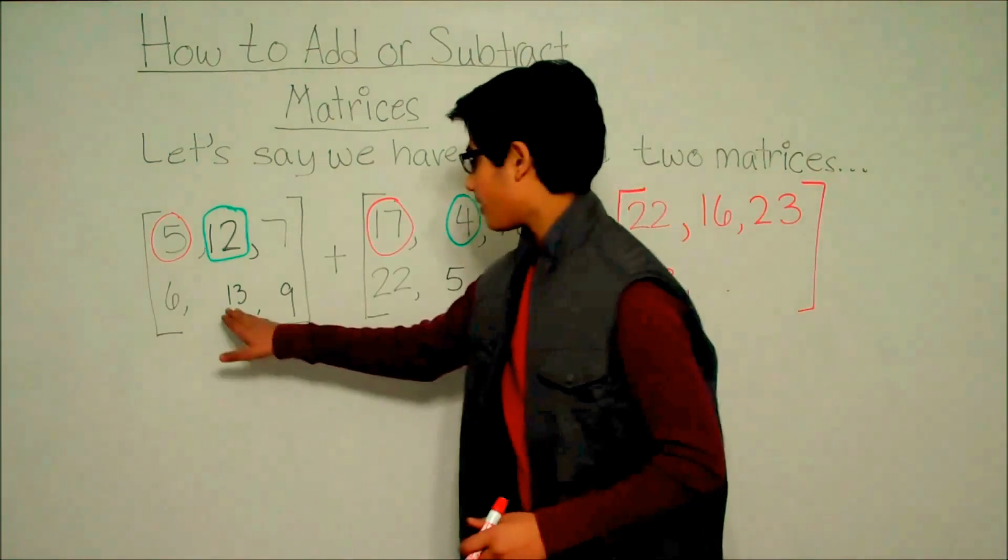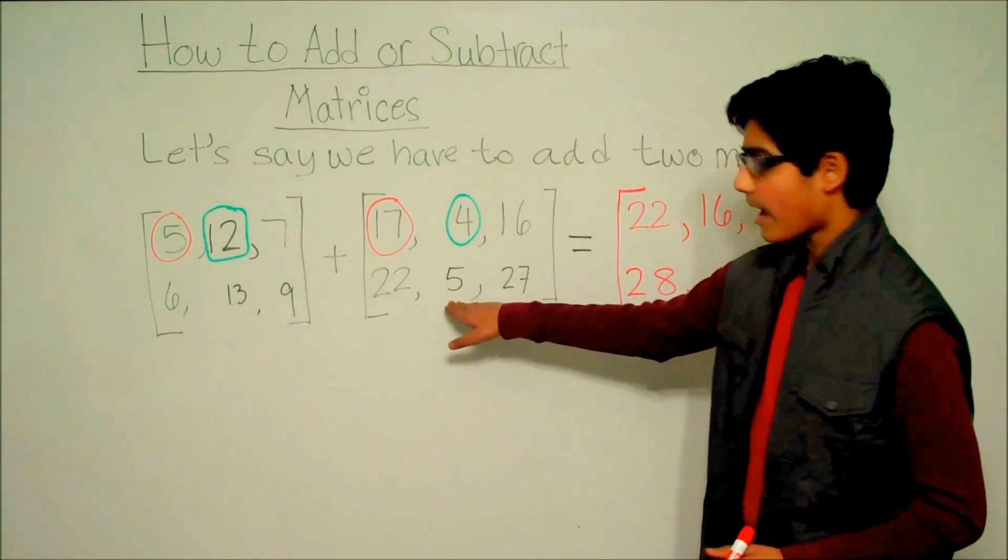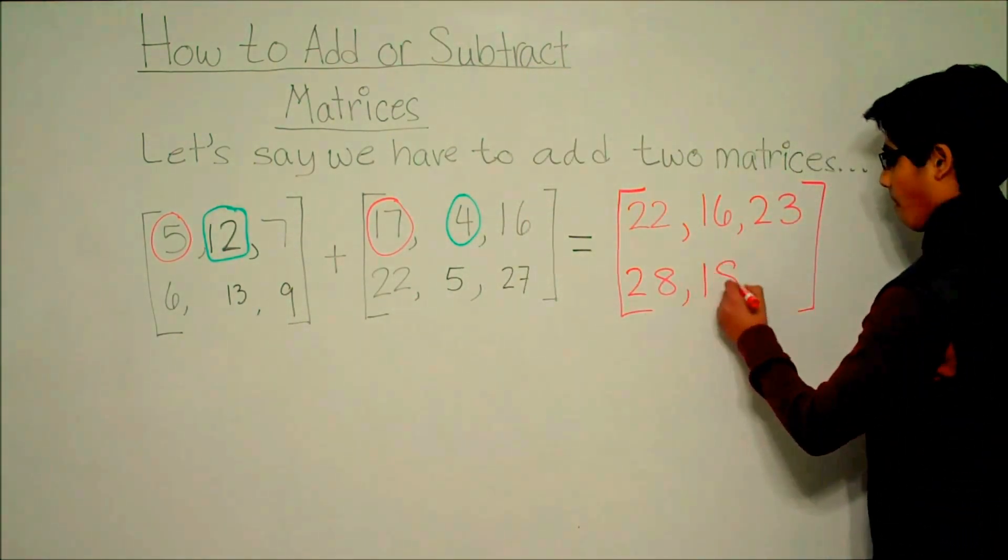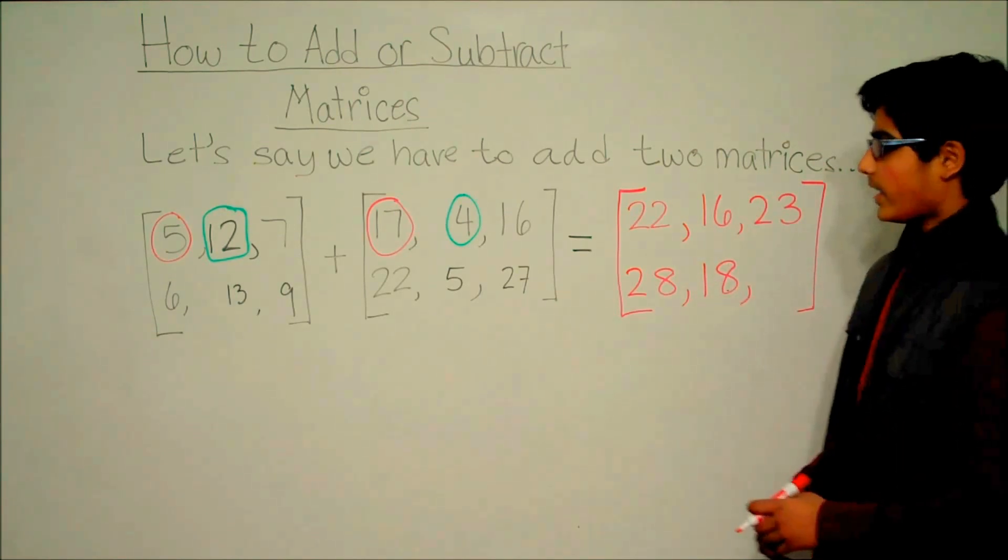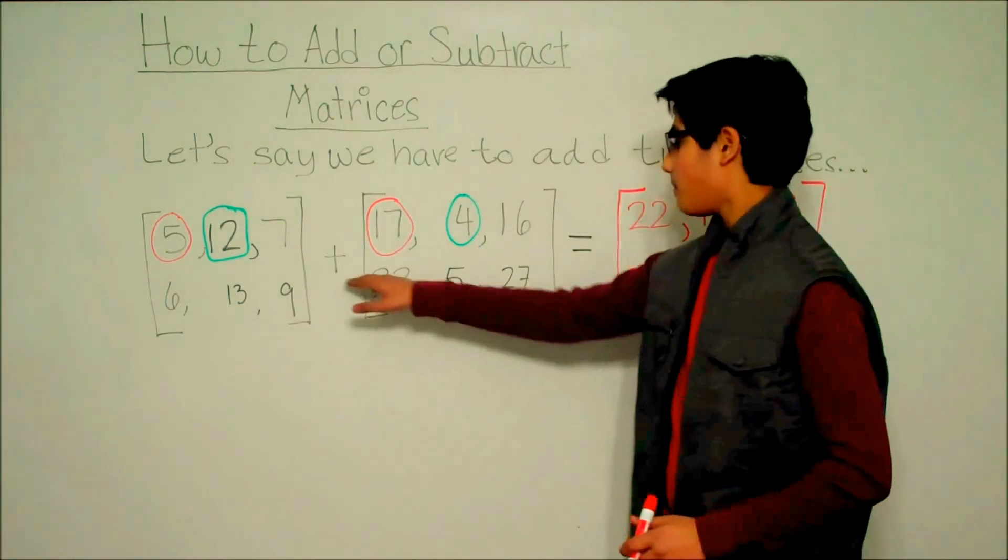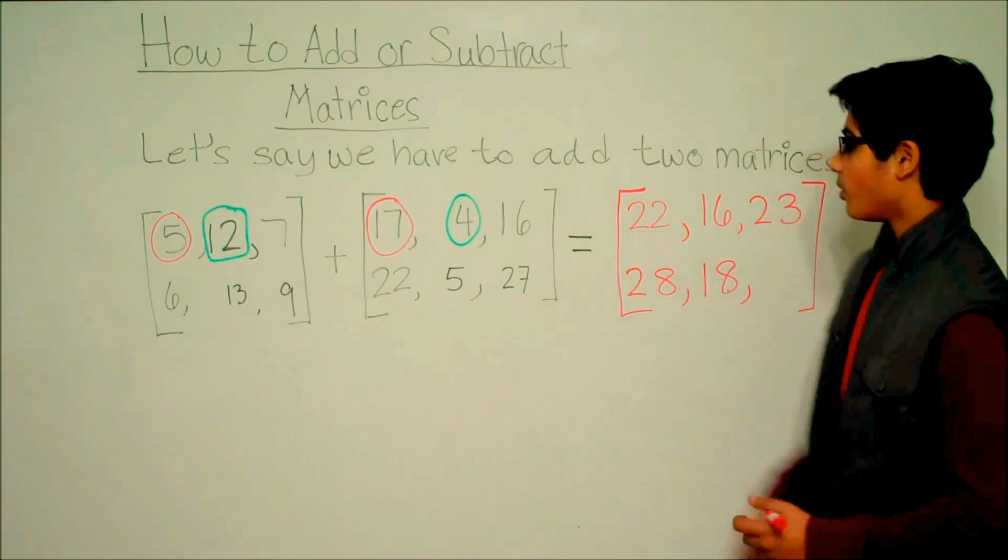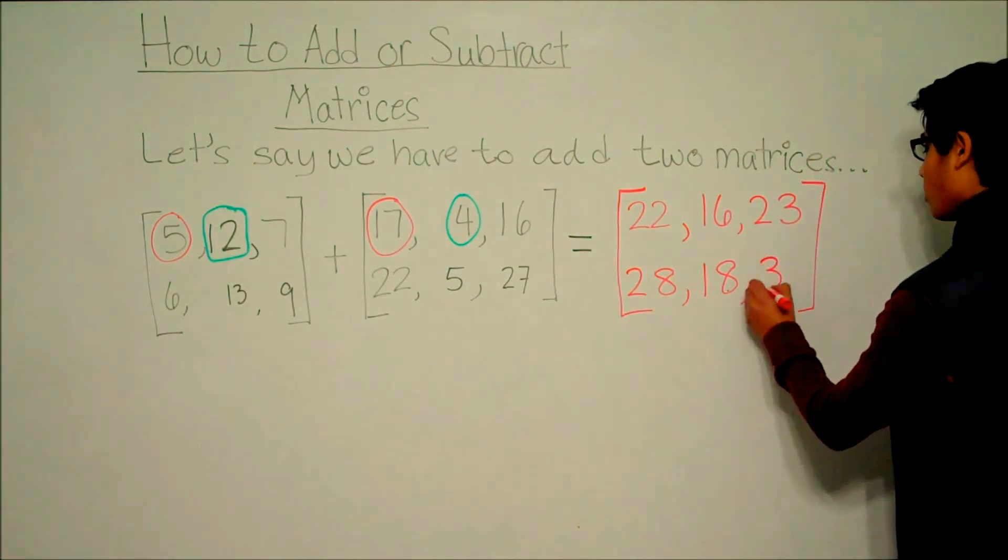And then we have 13 plus 5, which is 18, and then we have 9 plus 27, which is equal to 36.